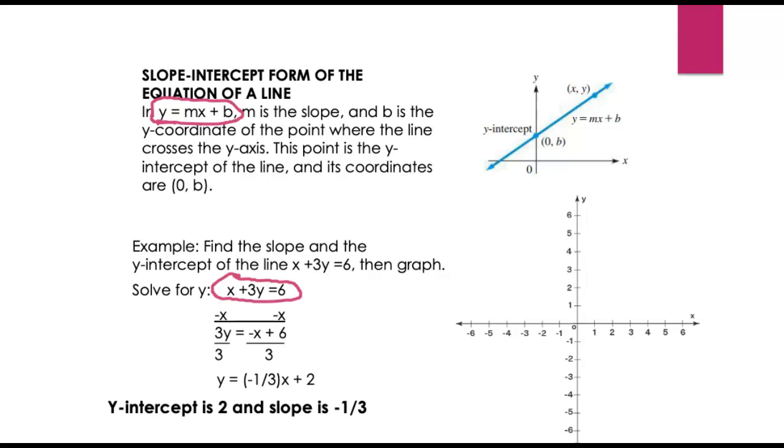To do that, we have to move the x to the other side of the equation by subtracting x. Then we need to get the y by itself, so we divide both sides by 3. And this is our equation in slope intercept form: y equals negative 1/3x plus 2. So that tells me that the y intercept, where this line crosses the y axis, is here at 2.